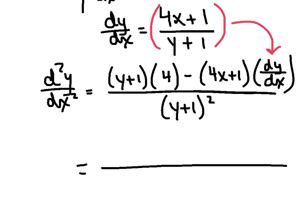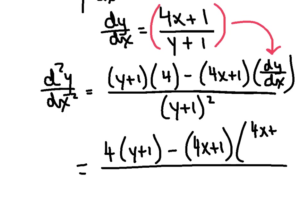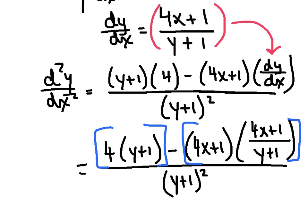So right now I've got 4 times the quantity y plus 1 minus, let's see, 4x plus 1 times this big ugly bear, 4x plus 1 all over y plus 1. And that whole thing is divided by y plus 1 squared. Now, here's the trick. How would you have treated a complex fraction back in Algebra 2? We're going to multiply all three terms. There's a term here, there's a term here, and then there's a term here on the bottom. I'm going to multiply all three of them by y plus 1. And let's see what that gives us.